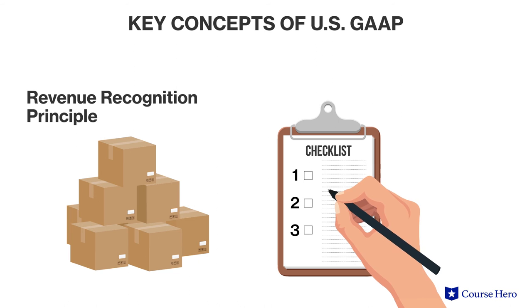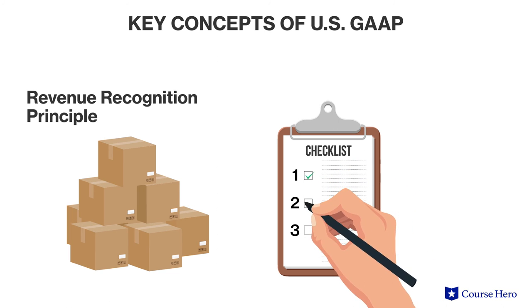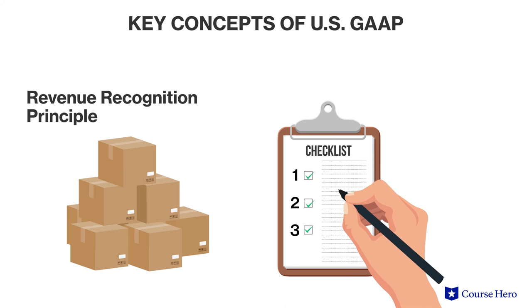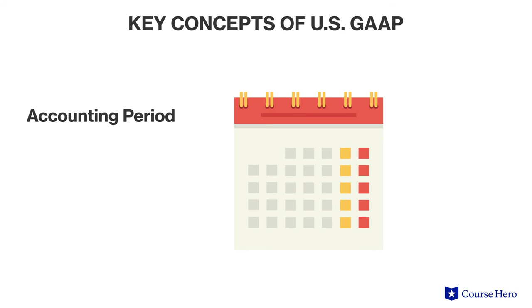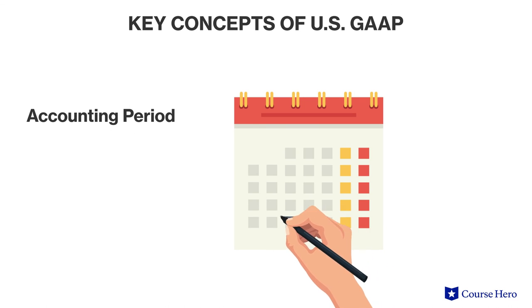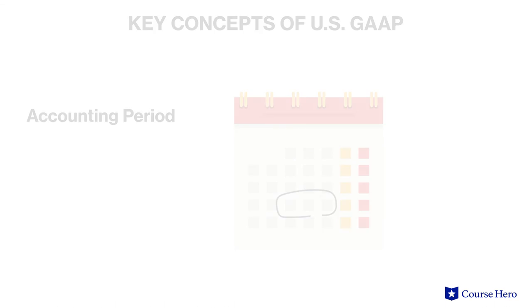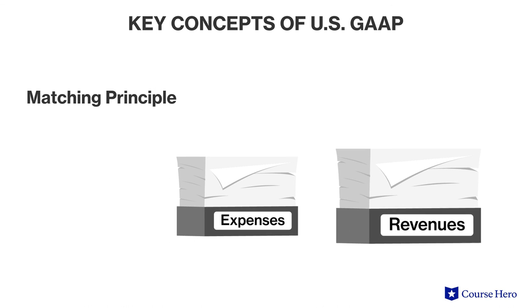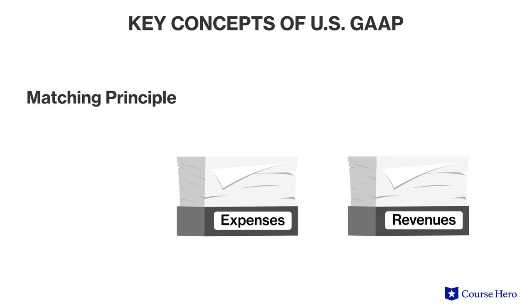The revenue recognition principle determines when revenue is recorded. This is particularly important because the timing of revenue recognition has a direct impact on a company's bottom line. Concept number six is the accounting period concept, which provides that transactions should be recorded in the period in which they occurred. Concept number seven is the matching principle, which is an effort to ensure that expenses are recognized at the same pace as the revenue that those expenses help generate.